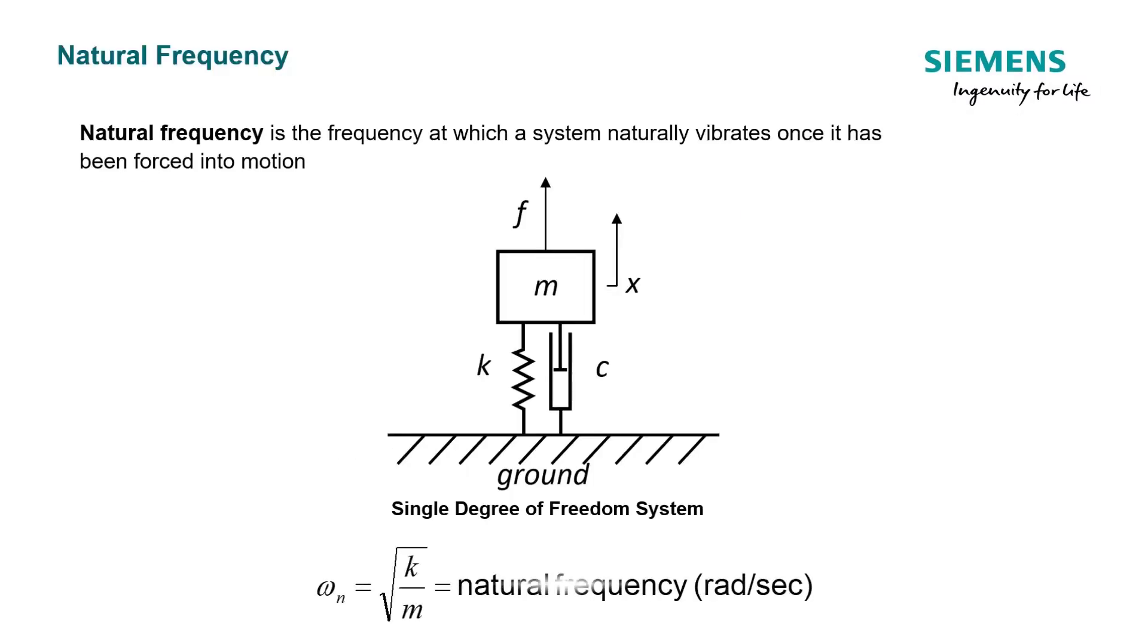If we look at this free body diagram, like Keith mentioned, we have an equation to determine the natural frequency based on the spring rate K and the mass M. So the natural frequency is equal to the square root of K over M.